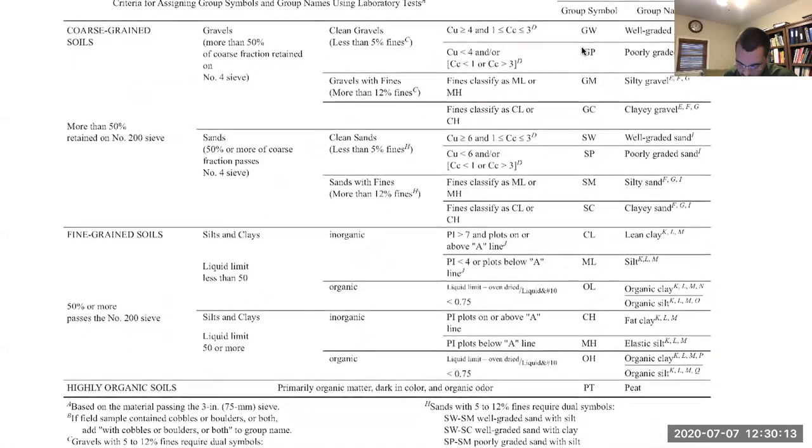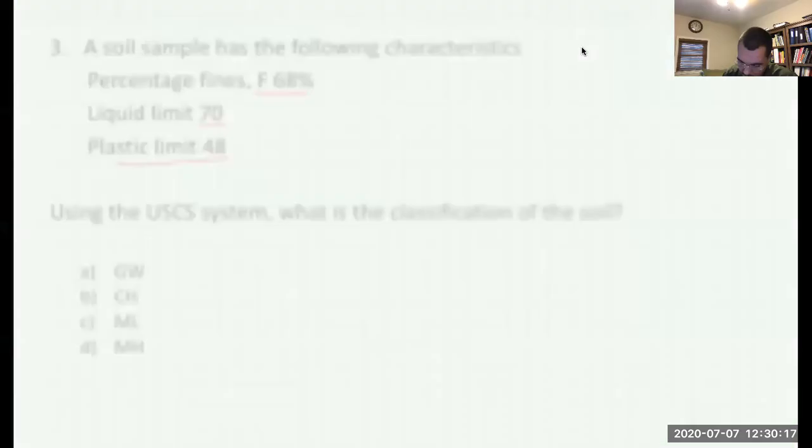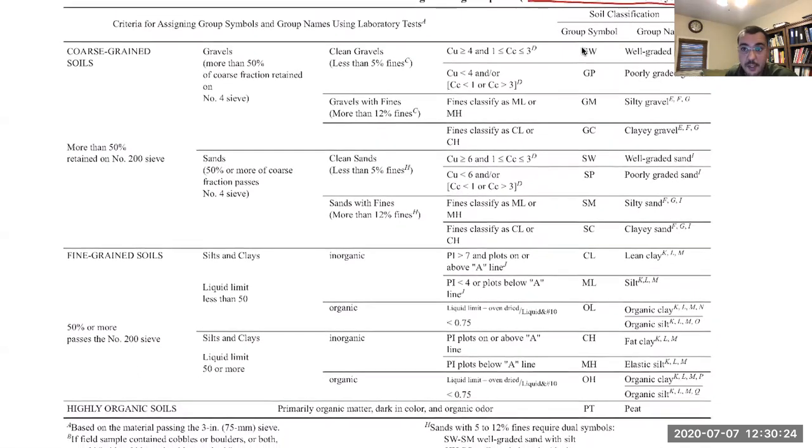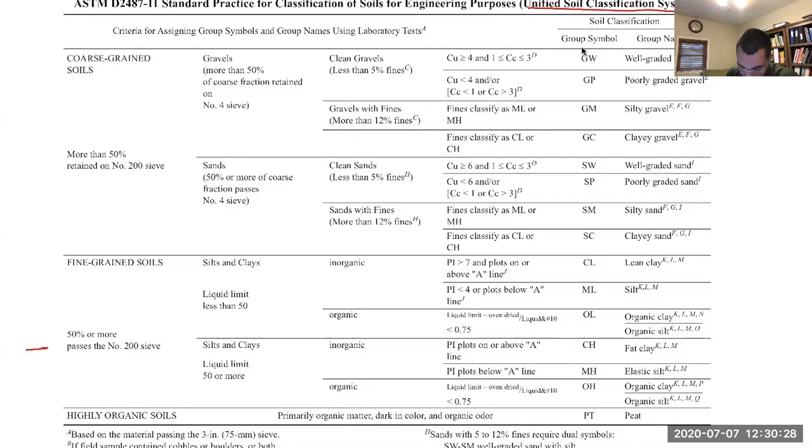In our particular question we have 68% fines. How do you use this soil classification system? You always start on the left-hand side and keep going forward. We have 50% or more passing the number 200 sieve, and we know that the number 200 sieve defines our fine portion. We have 68% passing the number 200 because the question told us we have 68% fines.